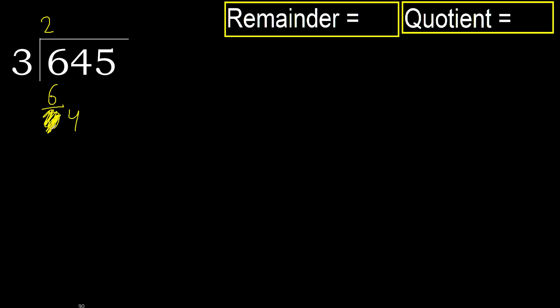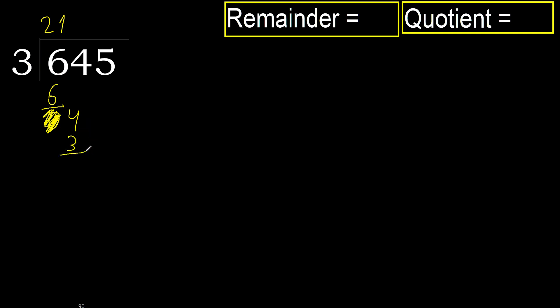Eliminate 0 on this side. Bring down 4. 3 multiplied by 2 is greater, so multiply by 1: 3 is not greater. Subtract.